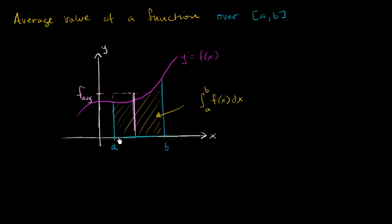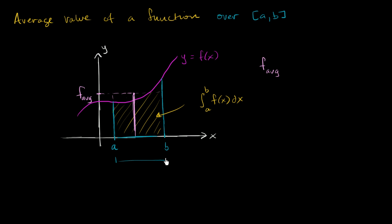Let's just express in math what we've already said. We already said that the function average should be some height, so the function average times the width of this interval — this width right over here —